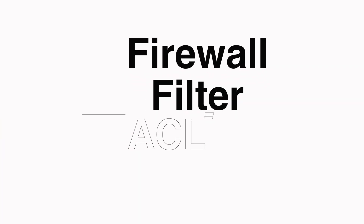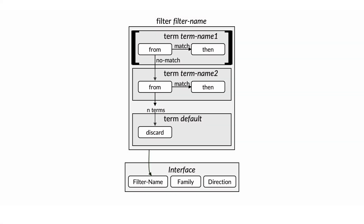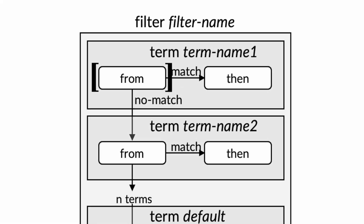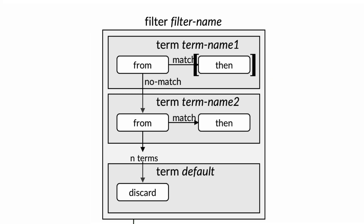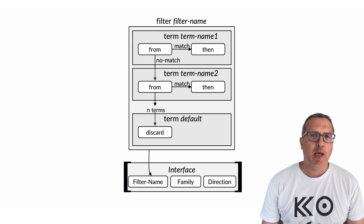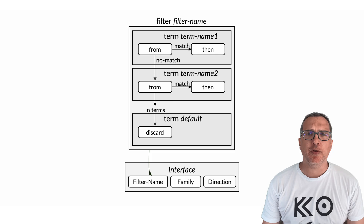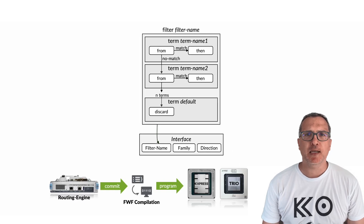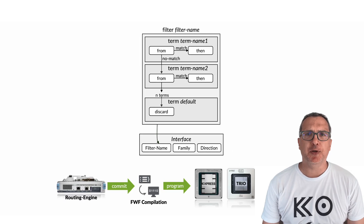A filter, also known as an ACL, is a set of entries or terms that each combine matching conditions under the FROM statement and a set of actions to execute if the condition is met. The filter is then applied or attached to a specific interface, subinterface, or even a forwarding table in either the ingress or egress direction. In practice, a filter configuration is first optimized, compiled, and only then programmed into the hardware.